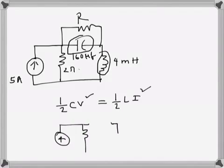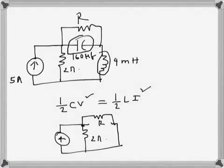The capacitor will be an open circuit and the inductor will be a short circuit, and then there is this R. This is two ohms, so the voltage here is V — the voltage across the capacitor — and this current that will flow through the resistor R is the current through the inductor.